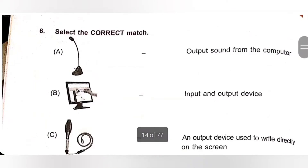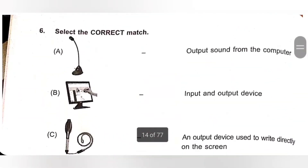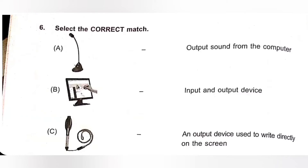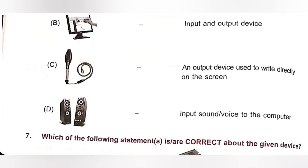Question 6: Select the correct match. A. Microphone — output sound from the computer. Incorrect, because microphone inputs sound into the computer; speaker outputs sound. B. Touchscreen — input/output device. Yes, touchscreen is both an input and output device. C. Light pen — an output device used to write directly on the screen. Incorrect; light pen is an input device. D. Speaker — input sound to the computer. Incorrect; speaker outputs sound. Option B, Touchscreen as both input and output device, is the correct answer.